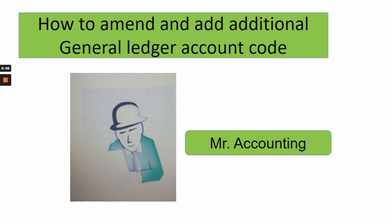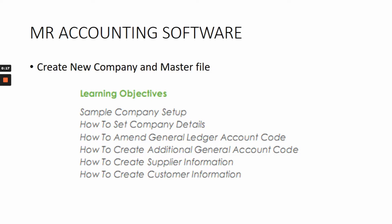Hi everyone. In this video I will show you how to amend and add additional general ledger account codes using MR accounting software. In this section I will show you how to create a new company and master file. The learning objectives are: sample company setup, how to set company details, how to amend general ledger account code, how to create additional general ledger account code, how to create supplier information, and how to create customer information.